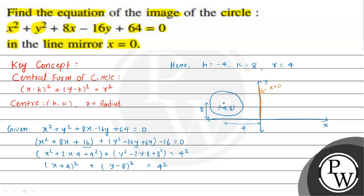Looking at the mirror image across the y-axis, the center is 4 units from the y-axis on the negative side. Its reflection will be 4 units on the positive x side. The y-coordinate remains 8 units, unchanged. So only the x-direction changes from negative to positive.